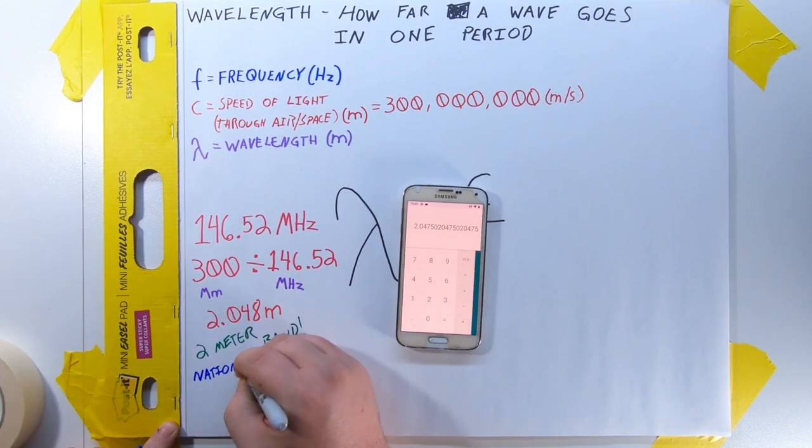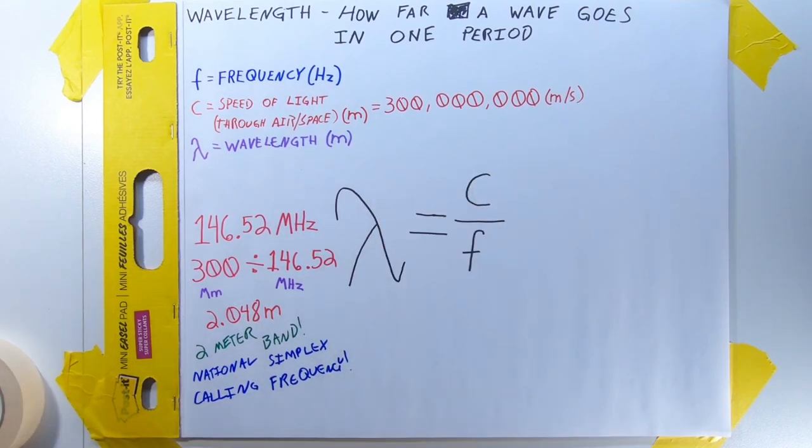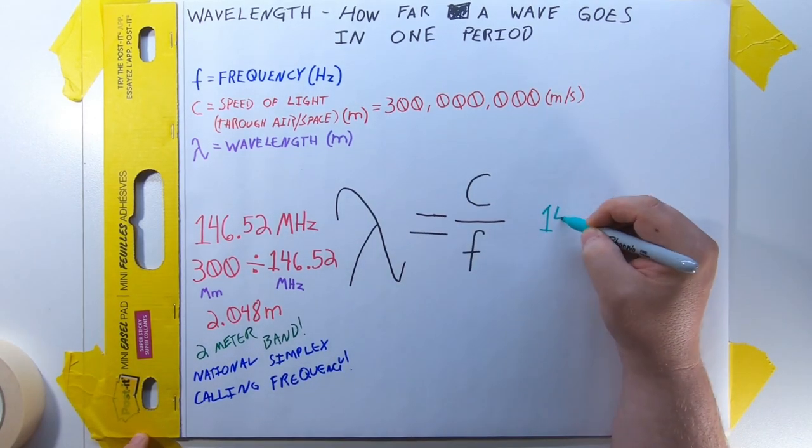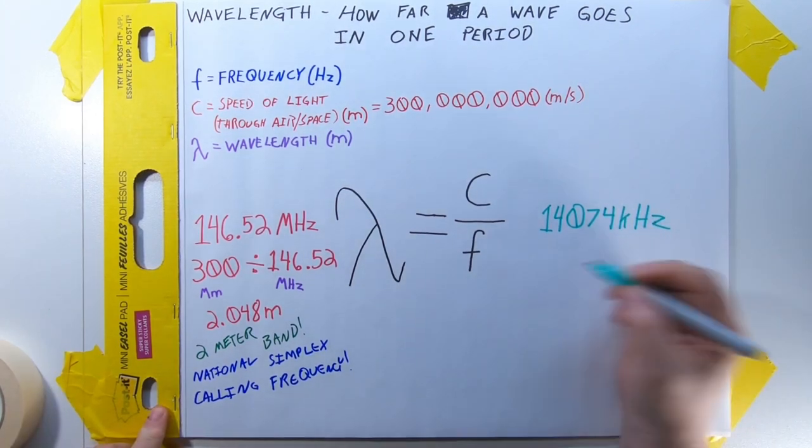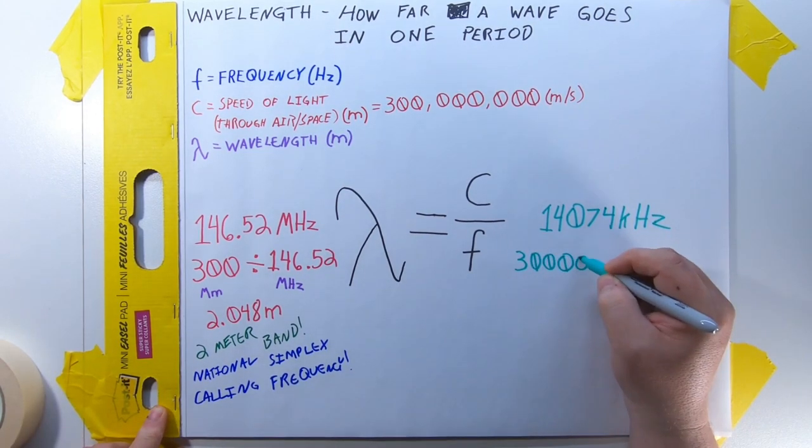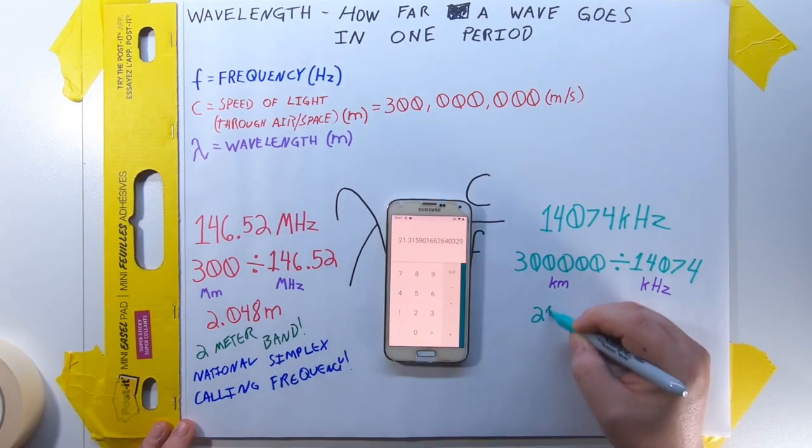Now, this frequency is also the national simplex calling frequency, but we'll talk about that later. In another example, you want to tune in and listen to 14074 kilohertz. Since we're dealing with kilohertz, we should use kilometers. So that's 300,000 divided by 14074, which gives us 21.316 meters.